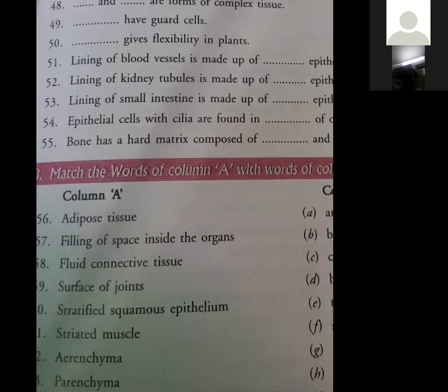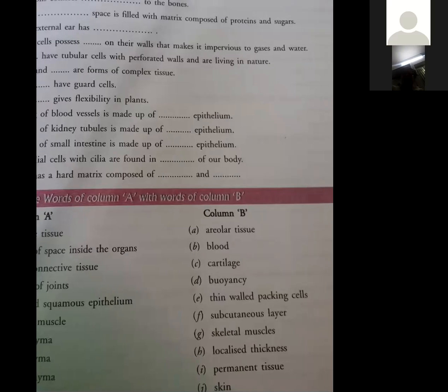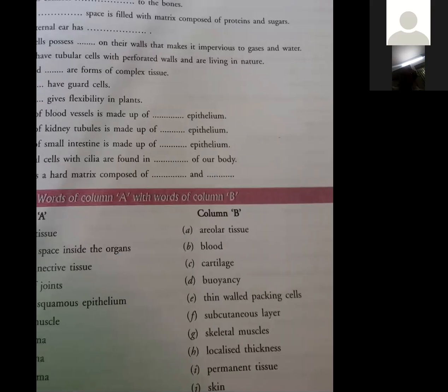Now come to the matching. Here is given adipose tissue. If we know the keywords, there is no problem in matching. Adipose tissue - what was in our mind? The fat layer, the subcutaneous layer. So the main keyword is fat. Now we will see how much matches with this. Here is given subcutaneous layer. We can write here subcutaneous layer.